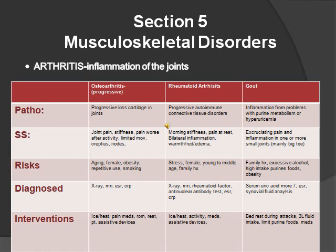Interventions for both osteoarthritis and rheumatoid arthritis are similar: ice, heat, pain medication, rest, PT, assistive devices, and medications that lower inflammation like NSAIDs and steroids.